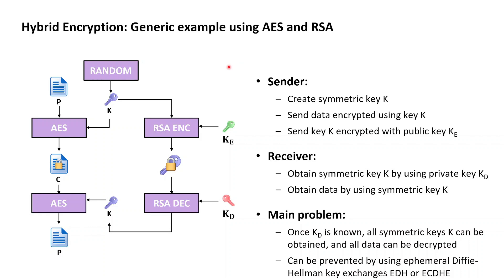If Alice now has such a public-private RSA key pair and has made the public key publicly available, then Bob, who again wants to confidentially send Alice a plaintext, proceeds as follows. In a first step, Bob creates a completely new random symmetric AES key K of an appropriate length, for example 128 bits. Bob then uses this new random AES key K to encrypt his plaintext, which results in a ciphertext.